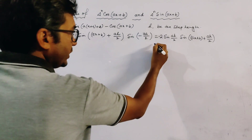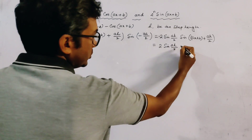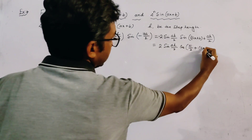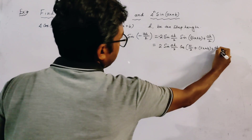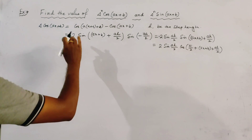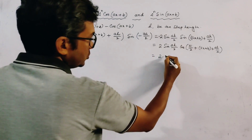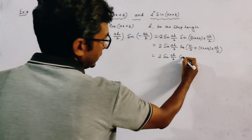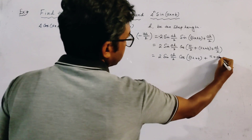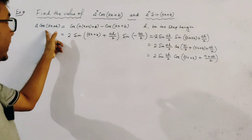We rewrite this relation using sin(θ) = cos(π/2 - θ) to transfer sin to cos form, yielding 2 sin(ah/2) cos(ax + b + π/2 + ah/2). So this is the first order forward difference of cos(ax + b).